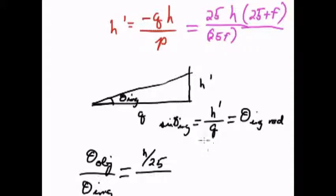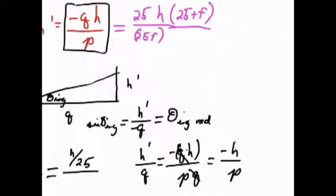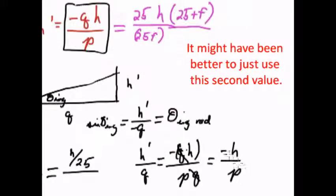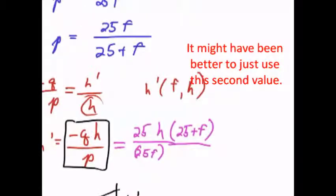Let's just solve that h prime over q from here. h prime over q is, actually I think it's h prime over negative q. And this would be h prime over q would be negative q h over p over q. So these two q's cancel and we're left with negative h over p. Negative h over p, and p we already decided was 25f over 25 plus f.